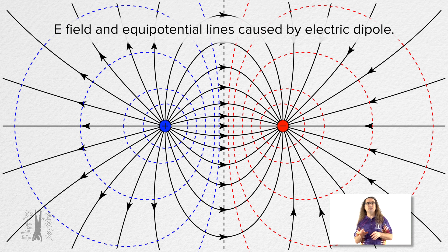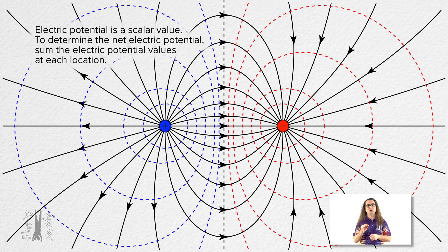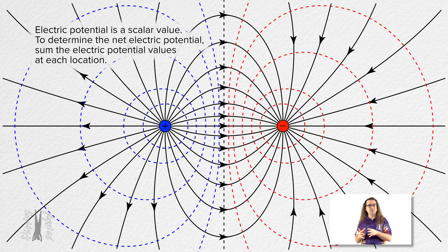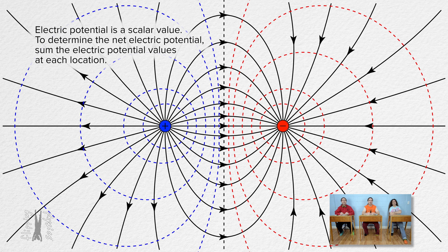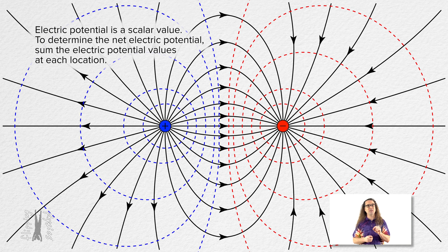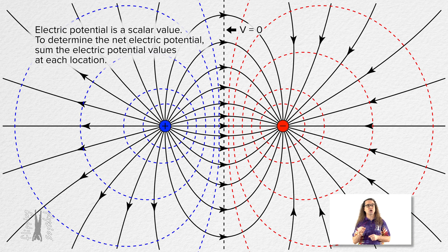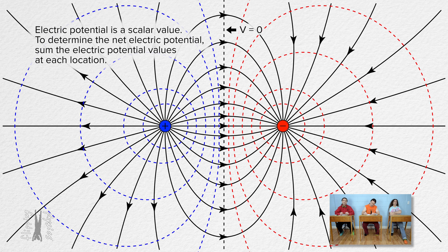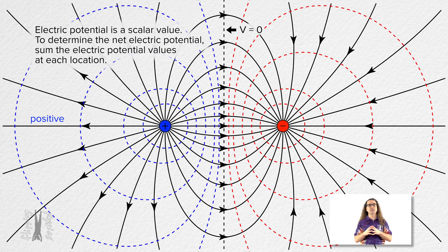Notice the electric potential caused by the electric dipole is calculated simply by summing the values of the electric potential caused by each point charge. This is because electric potential is a scalar value. This means there exists, for an electric dipole, a vertical equipotential line directly between the two equal-magnitude charges, because the electric potential from both charges adds up to zero along that line. That means all of the equipotential lines in the positive point charge half of the electric field are positive, and all of the equipotential lines in the negative point charge half are negative.